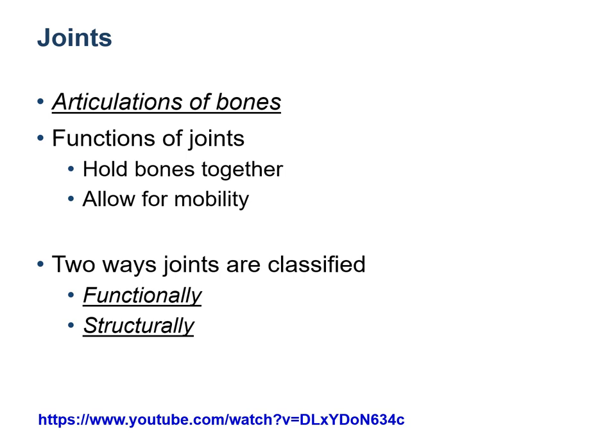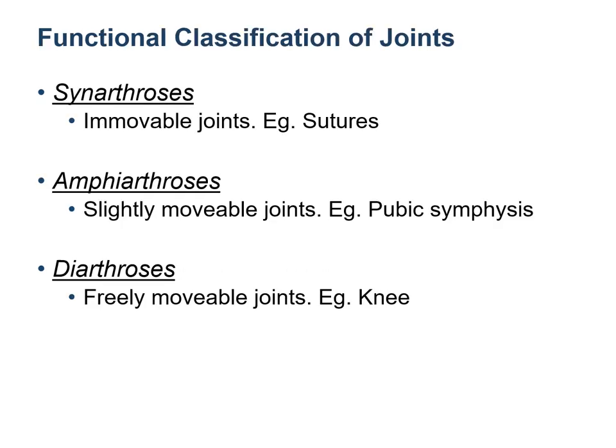Next we are going to learn about joints or articulations. The functions of articulations are to hold bones together and to provide mobility. Classification of joints is done in two ways: based on their function and on their structure. Functionally, joints are classified by the amount of motion they allow.